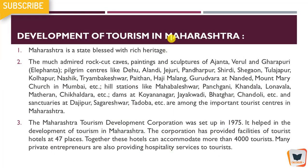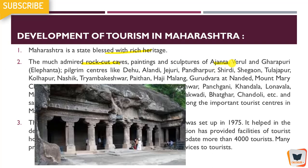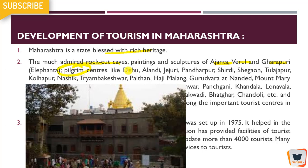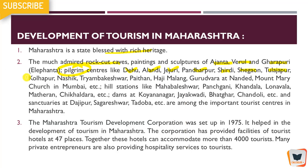Development of tourism in Maharashtra — how development should happen in Maharashtra. Maharashtra is blessed with three charms, and the main admired ones are the rock-cut caves of Ajanta, Ellora, and Gharapuri which is Elephanta. Then we also have pilgrim centers like Dehu, Alandi, Jejuri, Pandharpur, Shirdi, Shegaon, Tuljapur, Kolhapur, Nashik, Trimbakeshwar, Paithan, Haji Malang, Gurudwara at Nanded.